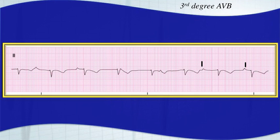Just try to march those out with that same P-to-P interval, and you will be able to see that some of them are hidden within the T waves and QRS complexes. The P-to-P's are regular, and the R-to-R's are regular. There are no dropped beats. You just have AV dissociation. That's a third degree AV block.